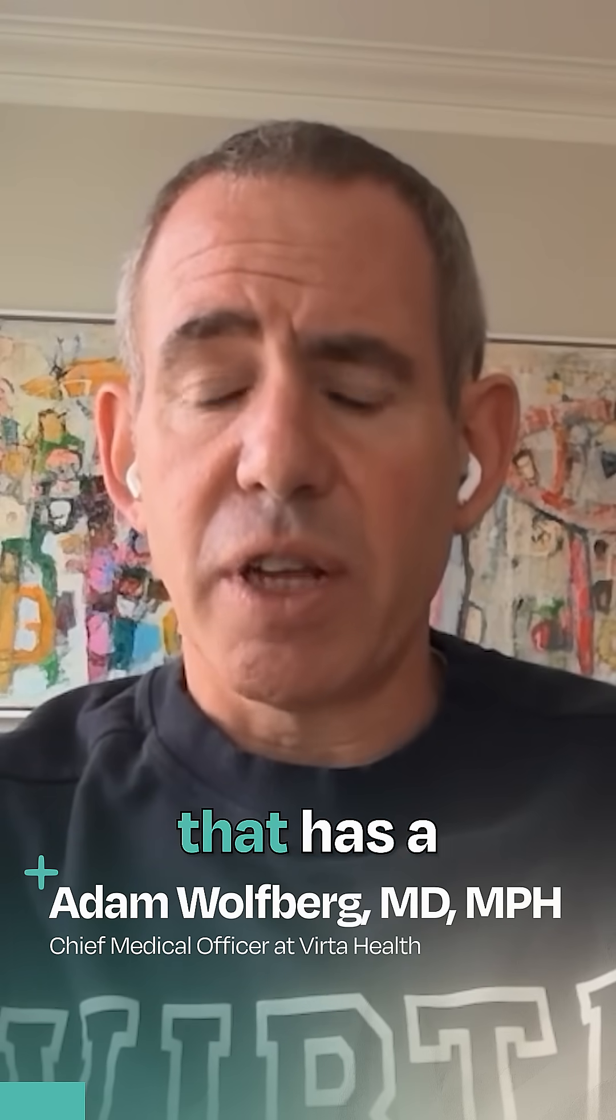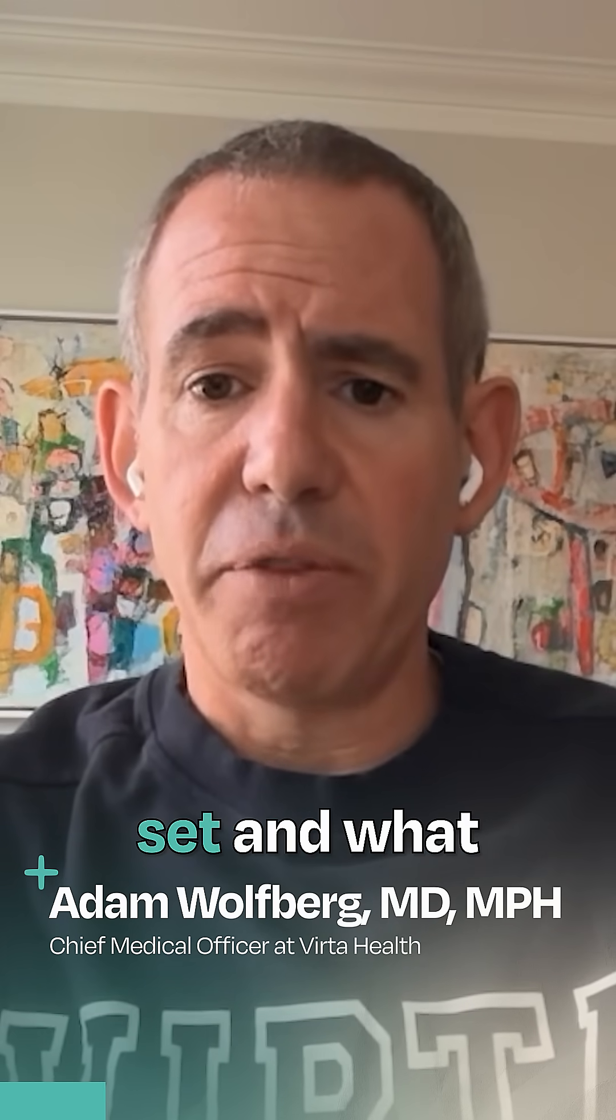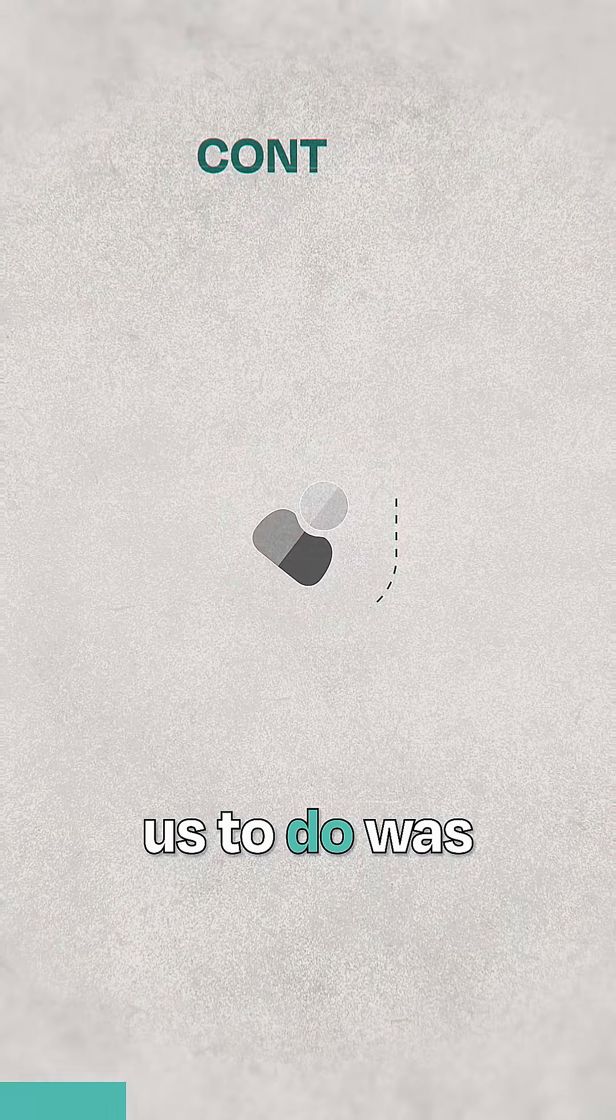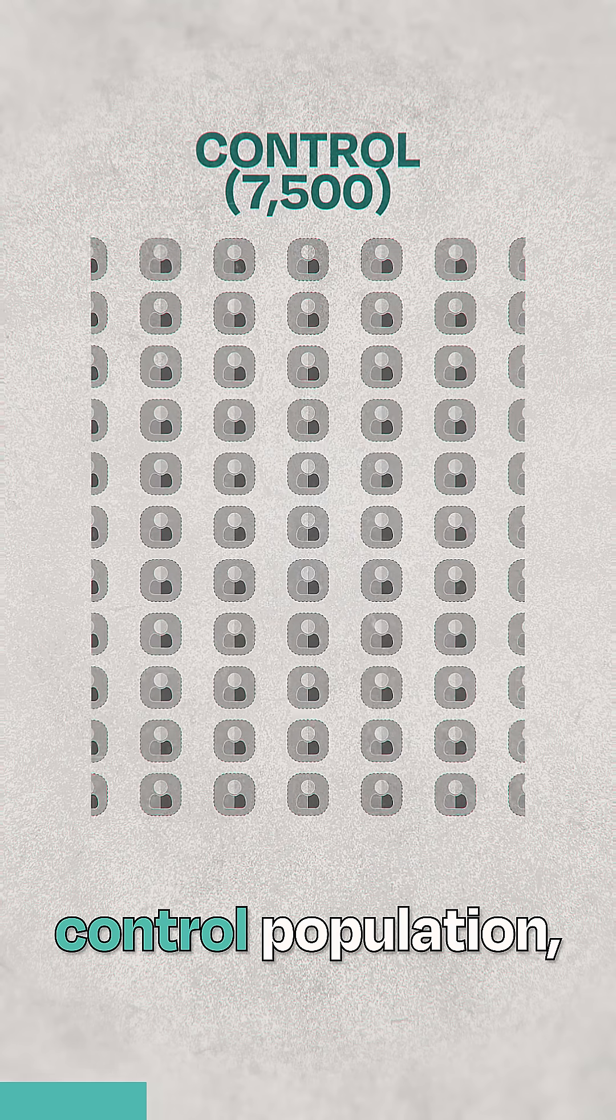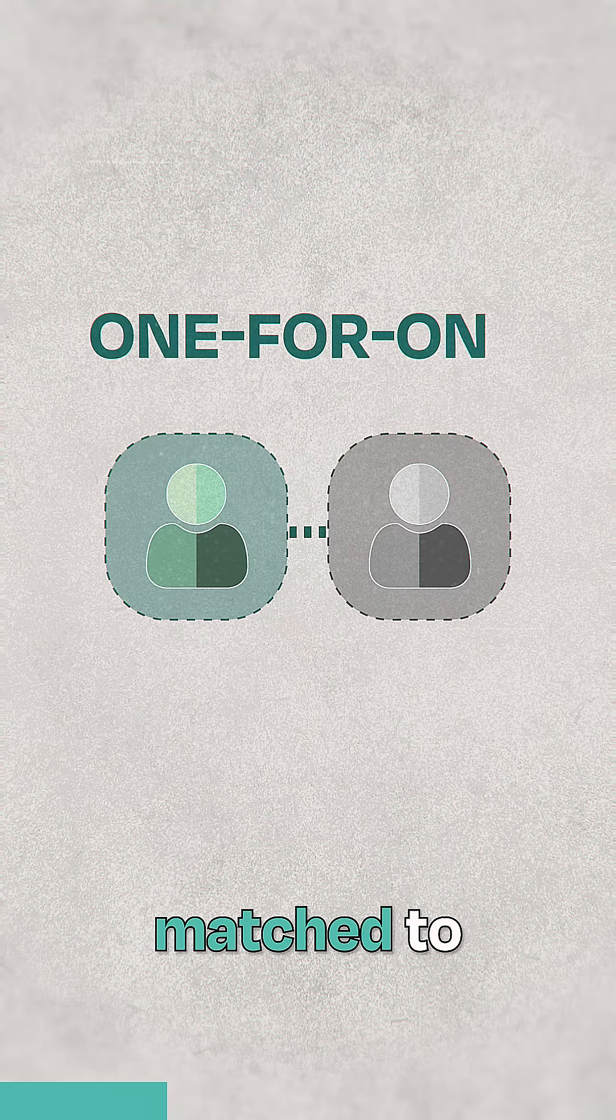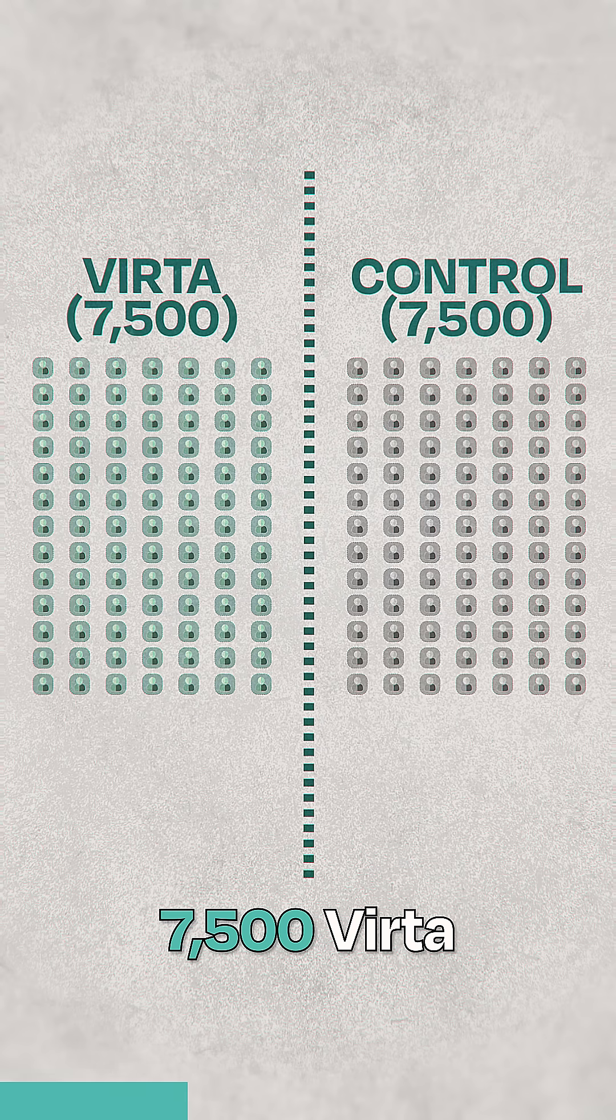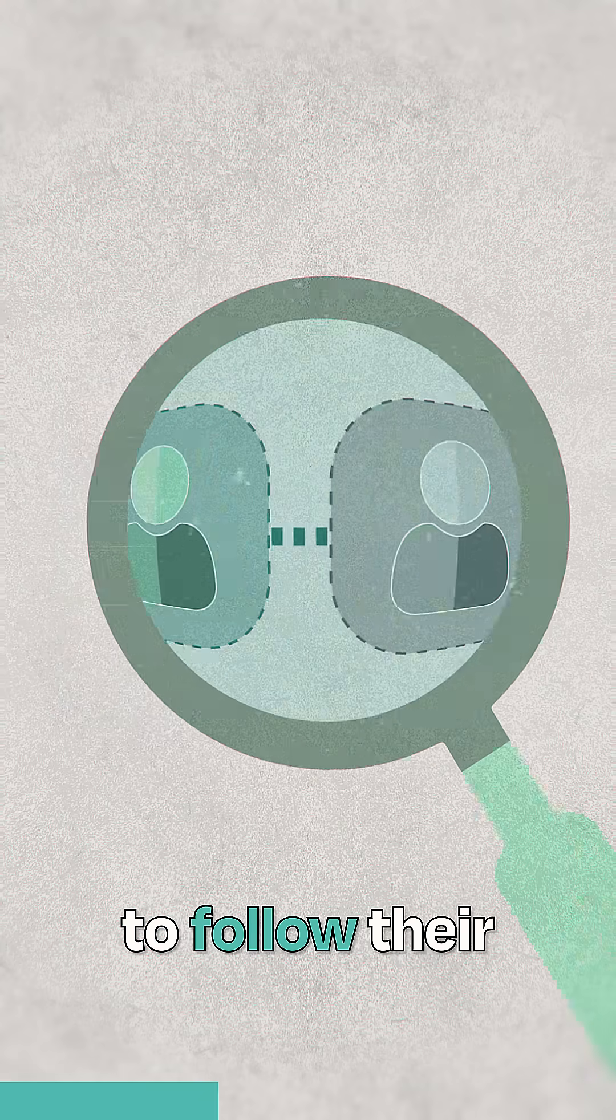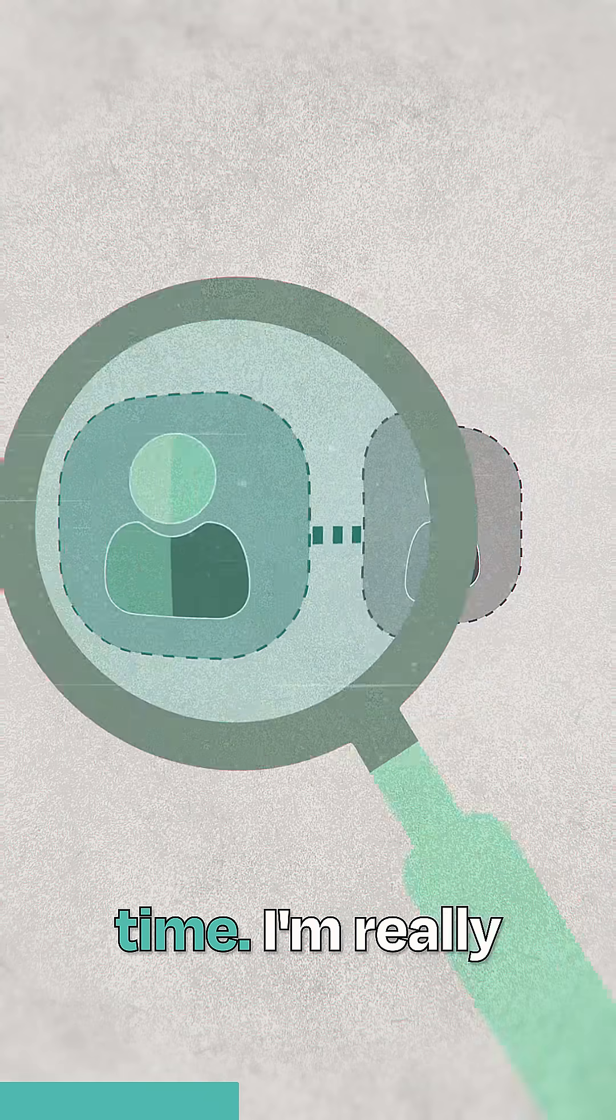Virta partnered with an organization that has a very large medical claim set, and what it allowed us to do was create a control population one-for-one matched to 7,500 Virta patients. It allowed us to follow their claims outcomes over time.